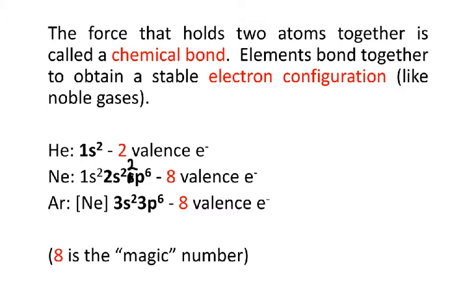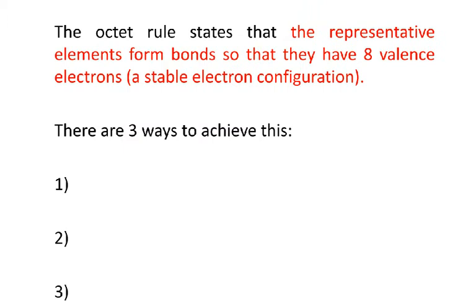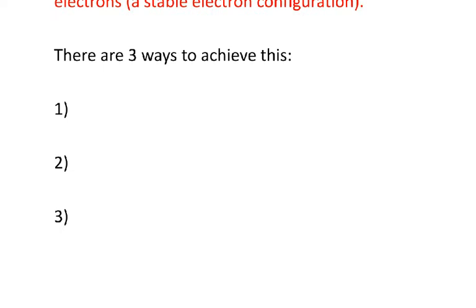All of the elements on the periodic table have noble gas envy. They want to be just like them — they would like to have a stable electron configuration. So there's something called the octet rule. OCT is the prefix for eight. The octet rule states that the representative elements form bonds so that they can have eight valence electrons, which is a stable electron configuration.